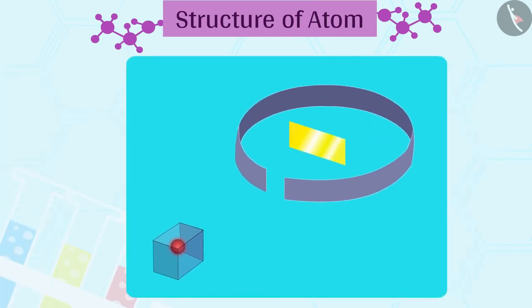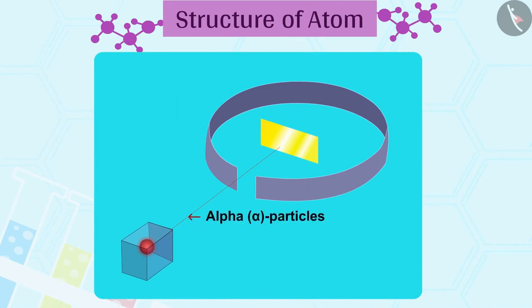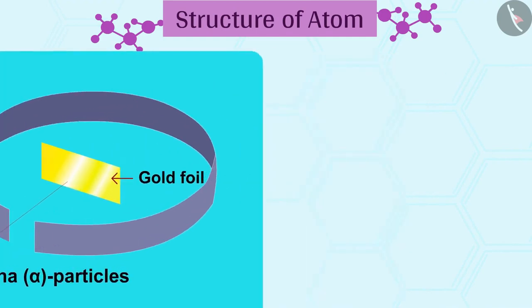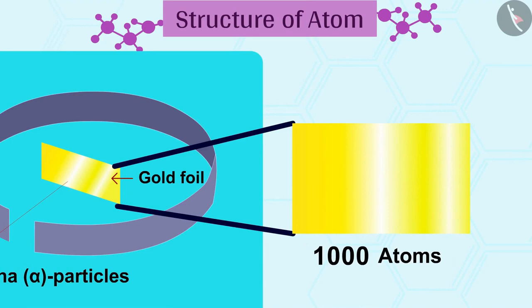In this experiment, fast-moving alpha particles were made to fall on a thin gold foil. 1. He selected a gold foil because he wanted as thin a layer as possible. This gold foil was about 1,000 atoms thick.